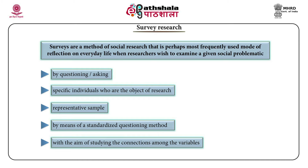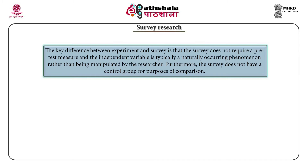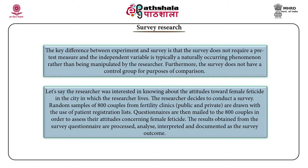The key difference between experiment and survey is that survey does not require a pre-test measure and the independent variable is typically a naturally occurring phenomenon rather than being manipulated by the researcher. Furthermore, the survey does not have a control group for the purpose of comparison. Let us say the researcher was interested in knowing about the attitude towards female feticide in the city in which the researcher lives — the researcher decides to conduct a survey.